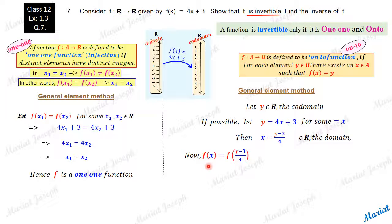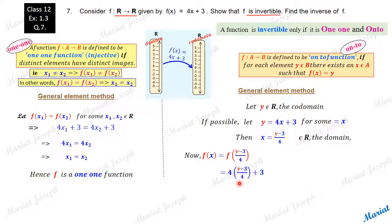Now, will the image of x equal y itself? Let us calculate f(x) where x = (y − 3) / 4. Applying the rule: f((y−3)/4) = 4 × (y−3)/4 + 3 = (y − 3) + 3 = y. So corresponding to a y taken in the codomain, I could get an x in the domain such that f(x) = y, fitting the definition of onto. Hence, this function is an onto function.